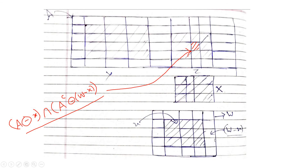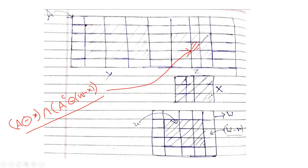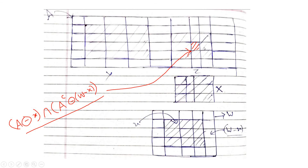We can generalize this by naming W minus X as another structuring element. In the general notation we have two structuring elements B1 and B2, where B1 corresponds to the object (X) and B2 corresponds to the background (W minus X). The hit-or-miss transformation is then defined as: (A eroded by B1) intersected with (complement of A eroded by B2). In this way we get the exact location of our object. That is all for this video; in my next video I will show the MATLAB implementation. Thank you for watching.